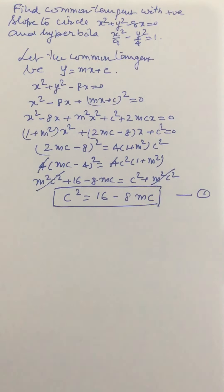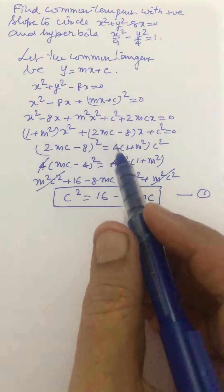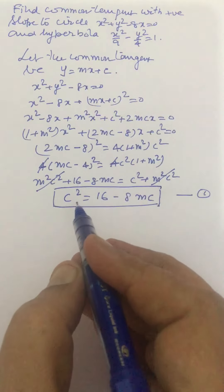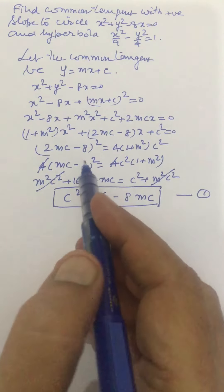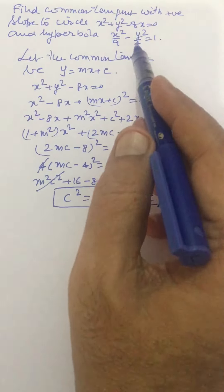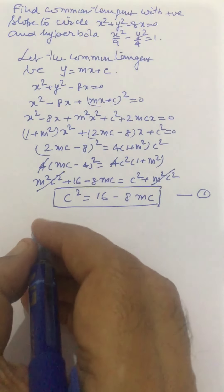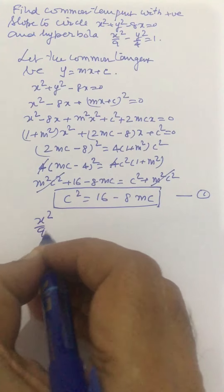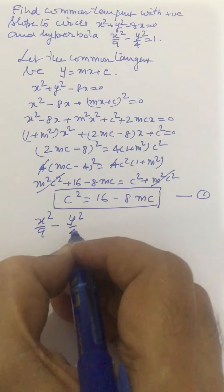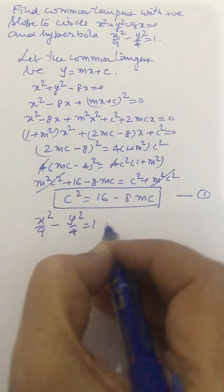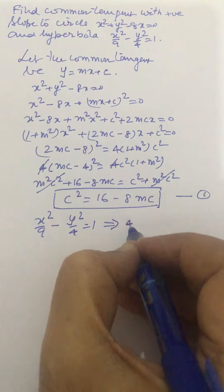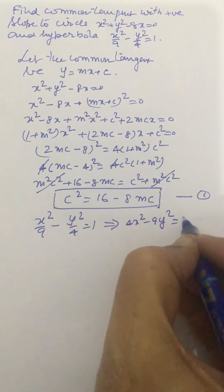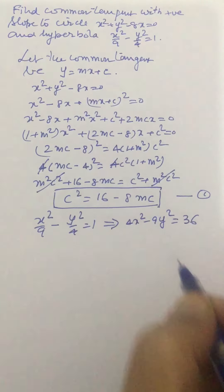Now, this line is also tangent to the hyperbola. We put y = mx + c into the hyperbola equation x²/9 - y²/4 = 1, which can be written as 4x² - 9y² = 36.